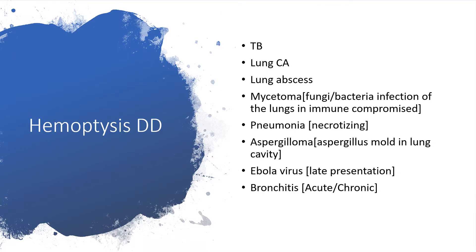The first thing in the tropical world would be tuberculosis. But in advanced countries where smoking is predominant, the first thing to think about is lung carcinoma, which could present in various forms. We could also be thinking about lung abscess and mycetoma — that is, fungal or bacterial infection of the lungs. In immunocompromised patients or individuals, this could be another cause, as well as pneumonia.